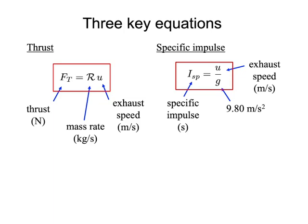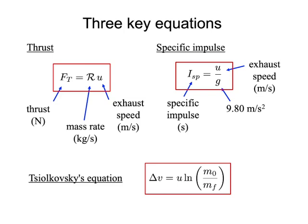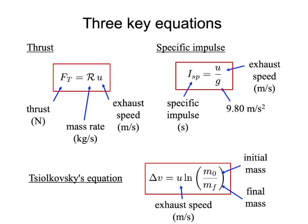Finally, in our last lecture before spring break, we introduced the fundamental rocket equation — Tsiolkovsky's equation — which tells you the total speed change a rocket can accomplish. That total delta-V equals the exhaust speed U times the natural logarithm of the ratio of the initial mass of the rocket to the final mass. The mass with fuel divided by the mass without fuel is called the mass ratio.